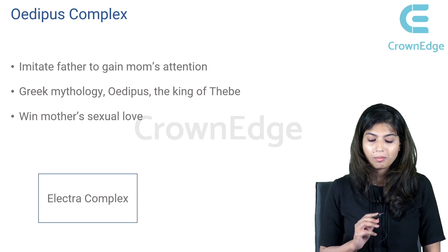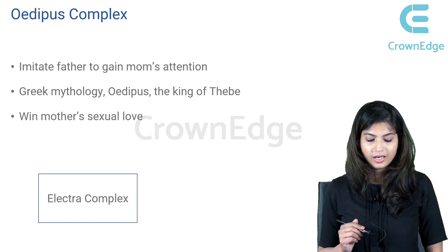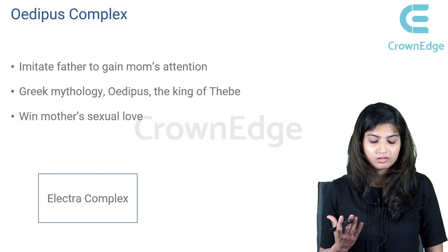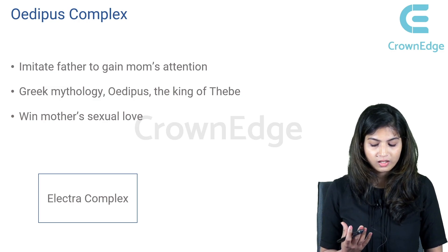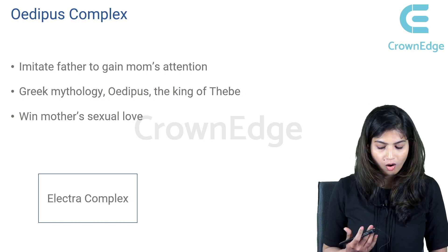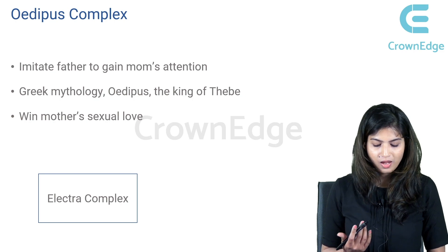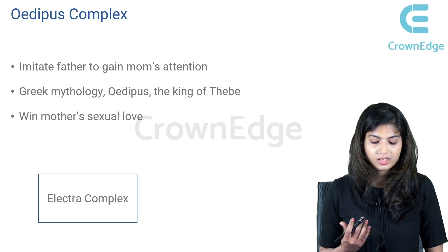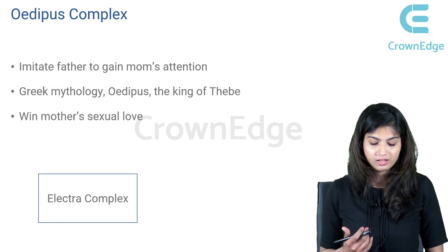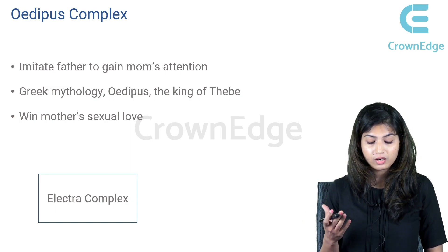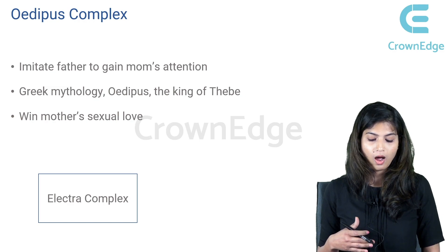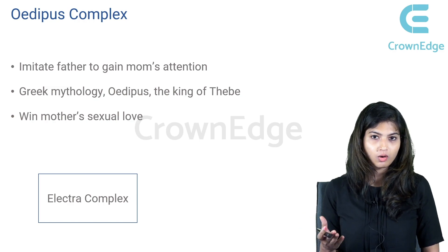The two complexes mentioned in the phallic stage are the Oedipus complex and the Electra complex. The Oedipus complex is seen in boys — boys try to imitate their father to gain their mother's attention. In Greek mythology, Oedipus is the king of Thebes who killed his father to win the mother's sexual love. The female counterpart is the Electra complex, where the girl wants to win the father's love and has envy toward the mother.